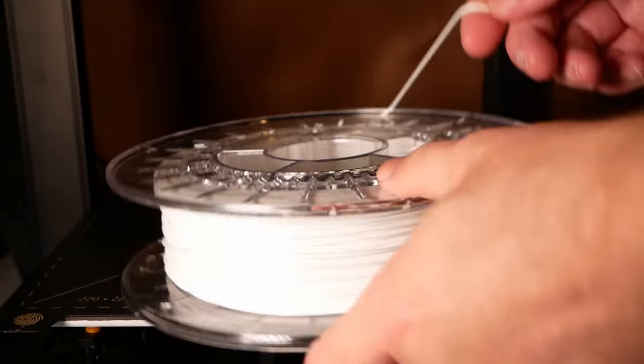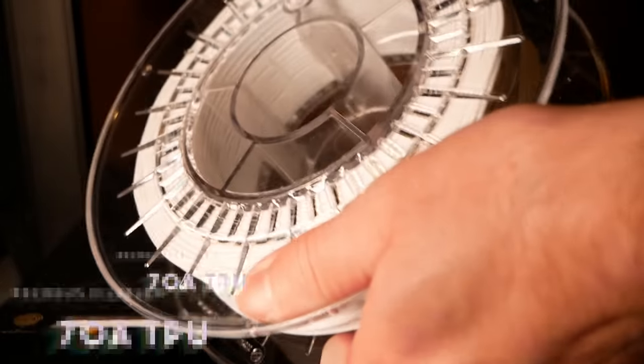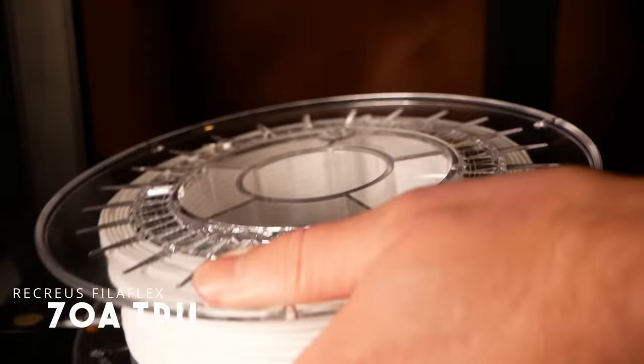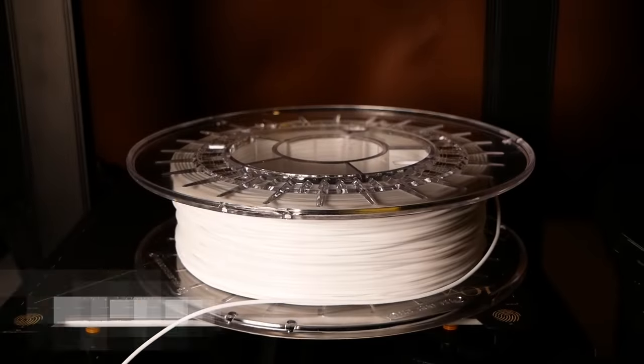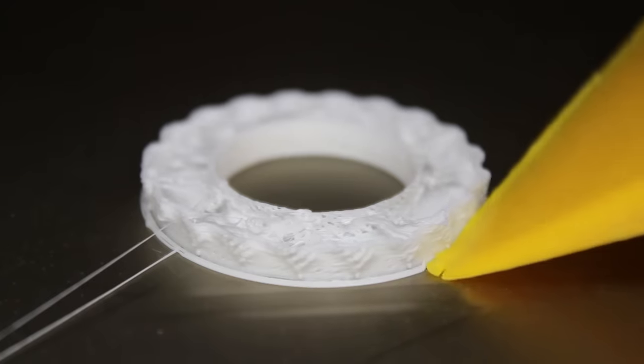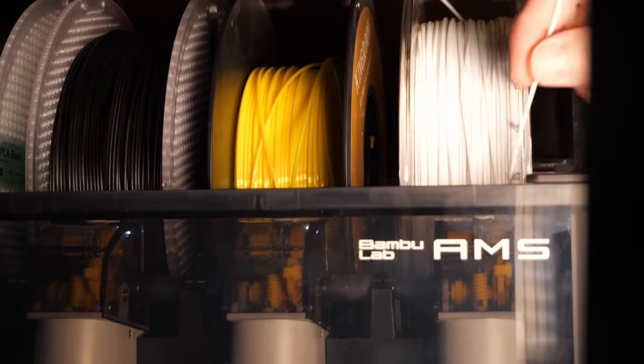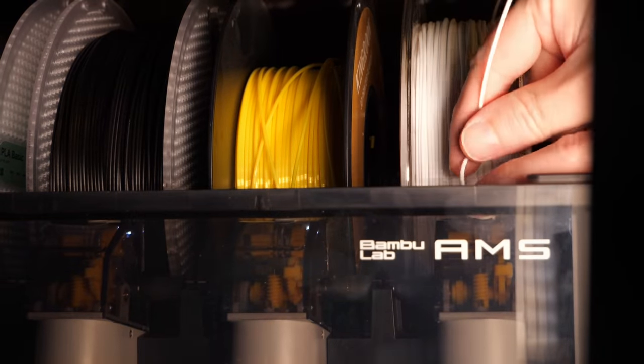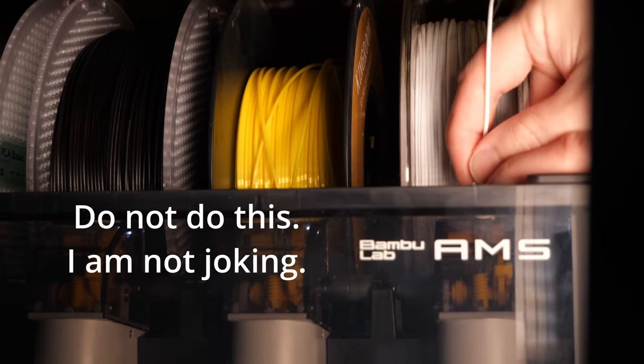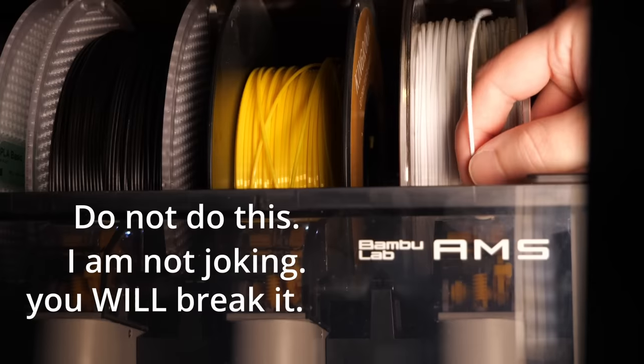If you've ever tried to print something with TPU that's really soft, like this 70a TPU, you'll know that it's not easy or quick. You'll have to tune your printer especially for it, and if it will print it, which a lot of printers won't, you'll have to do so very slowly.